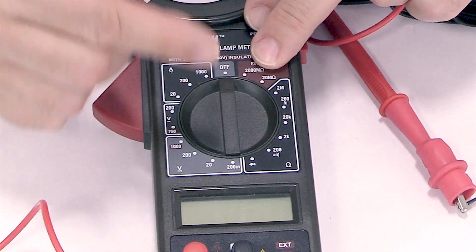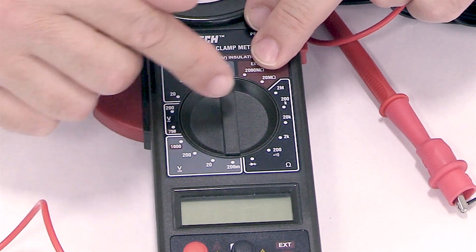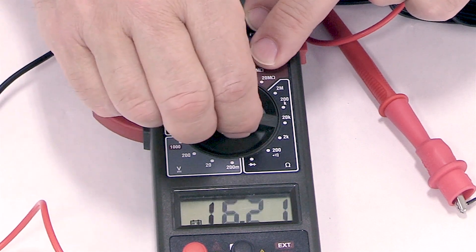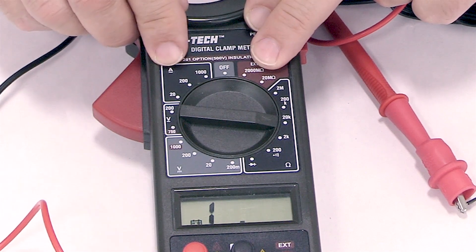So to do our test of our floor sensor, we need to set it to the 20k range. So we take our knob on the front and we set it to the 20k range.